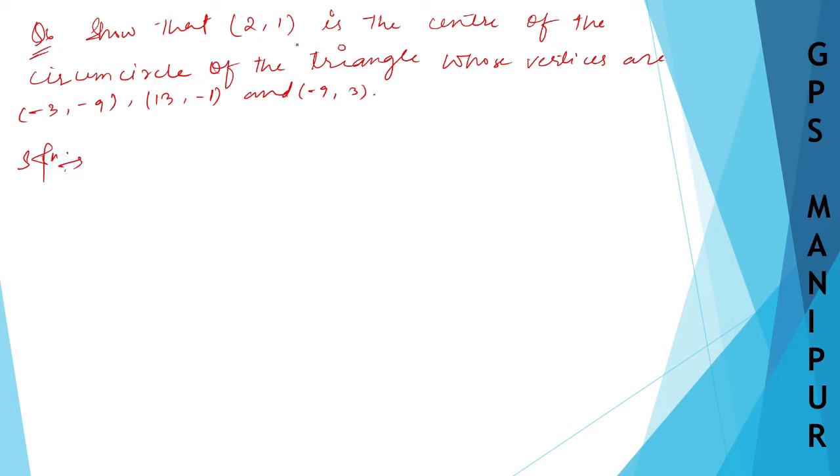So here is our question. The question says that (2,1) is the center of the circumcircle of a triangle. So what does it mean by circumcircle of a triangle? There is a circle, and there is a triangle inside. This is the center point of the circle.